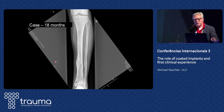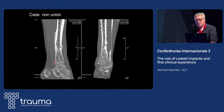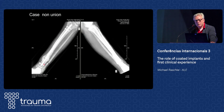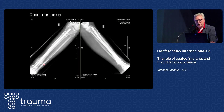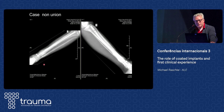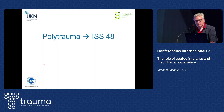This technique is also amenable for non-unions - for atrophic non-unions like you can see here - where we can address the non-union with a nailing procedure and achieve good and uneventful healing.